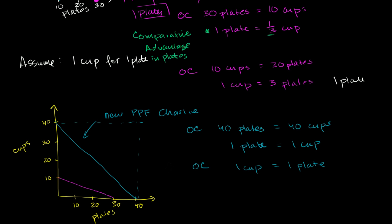Given this new reality, we've established Charlie has an absolute advantage in both — using the same inputs he can do more of either. When you're talking about absolute advantage, you have to think about the amount of inputs used and who's more productive. But let's think about comparative advantage for plates: who has a lower opportunity cost? Patty hasn't changed — her opportunity cost for producing a plate is one-third of a cup. Charlie's opportunity cost has improved but it's still worse than Patty's: he has to spend one cup to make a plate, while she only gives up one-third of a cup. So Patty still has the comparative advantage in plates.